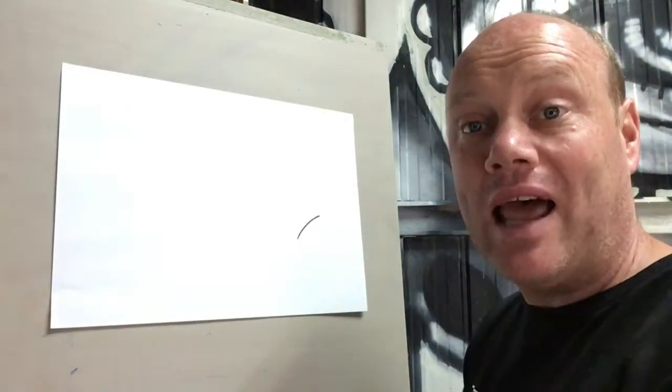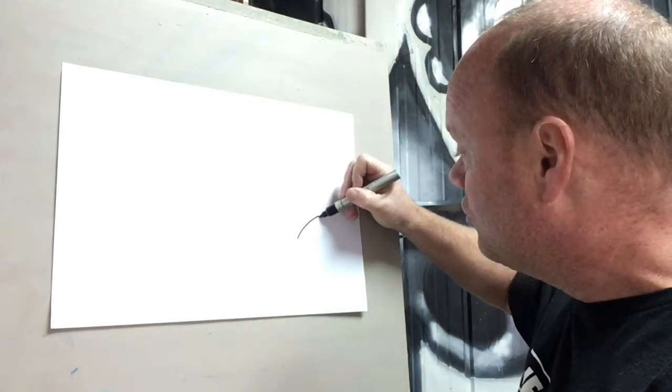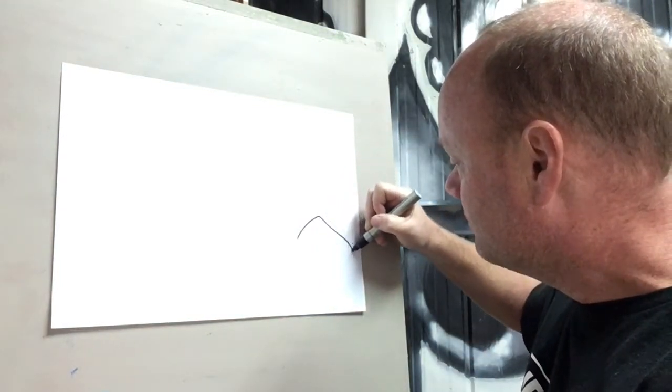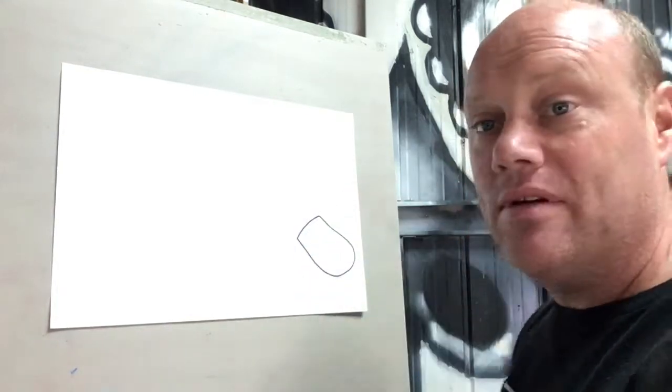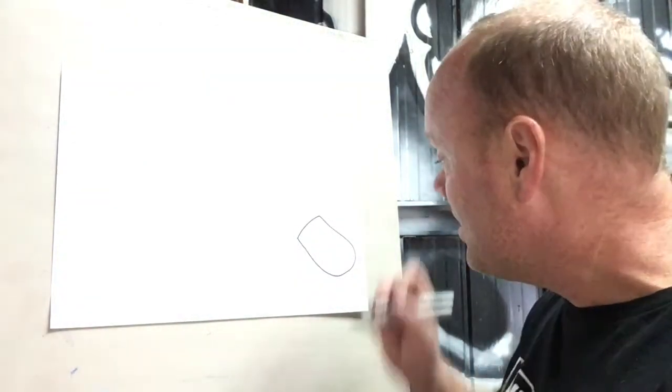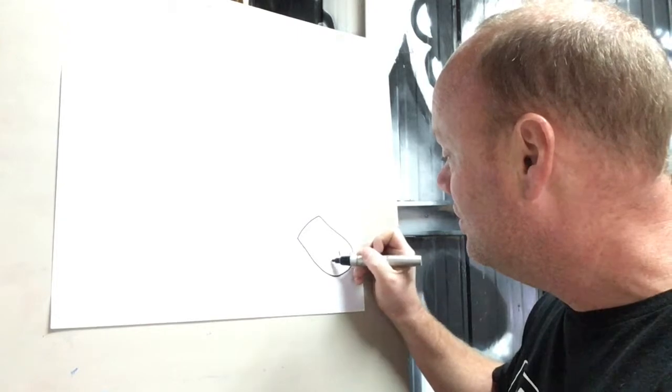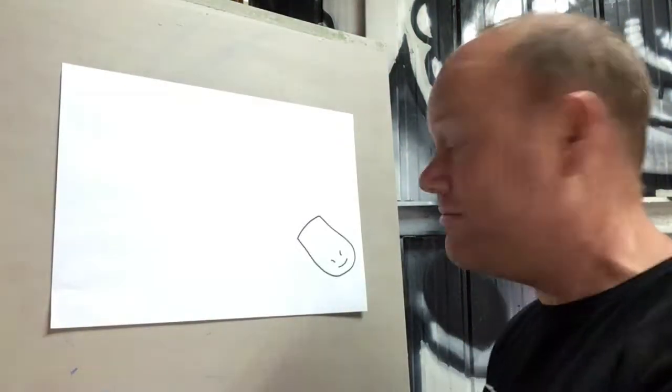After I've done that curved line, I'm now going to draw a line that comes out and around and back up, and that's going to be his duck bill. I might just draw some little nostrils in there too, maybe a little line at the end like a little smiley face at the end.